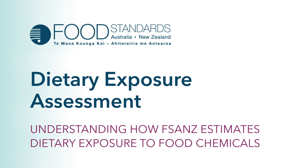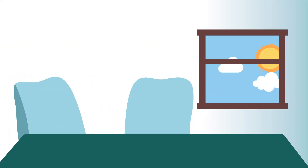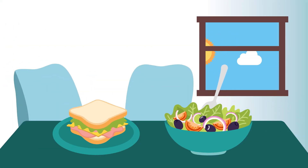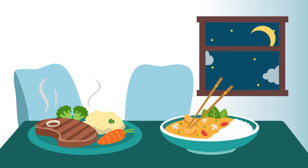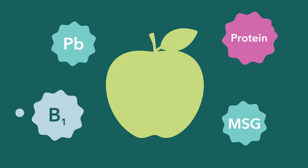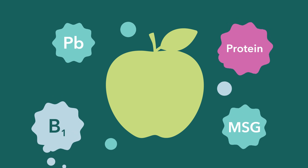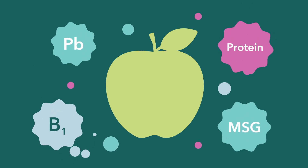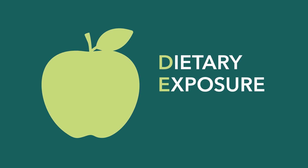Dietary exposure assessment: understanding how FSANZ estimates dietary exposure to chemicals in our food. Every day we enjoy a wide variety of foods and drinks. All foods are made up of chemicals — many occur naturally in food, while others are added or produced during food processing or cooking, or can enter from the environment. So, how do we know if the chemicals in our food are safe or beneficial? One way is through dietary exposure assessment.